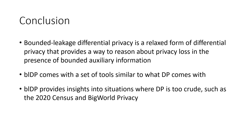In conclusion, we introduced this new relaxed form of differential privacy that provides a way to reason about privacy loss in the presence of bounded auxiliary information. We also showed that bounded leakage differential privacy comes with a set of tools similar to those of differential privacy, making it easy to reason about working with bounded leakage differentially private mechanisms. Lastly, we showed that bounded leakage privacy provides insights into situations where differential privacy is too crude to come up with satisfying conclusions, including the 2020 census and big world privacy — reasoning about privacy guarantees for individuals that don't participate in particular studies. Thank you for listening.